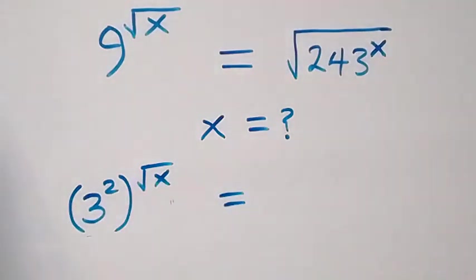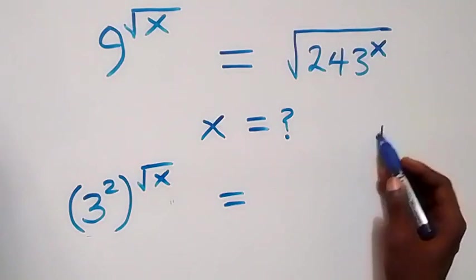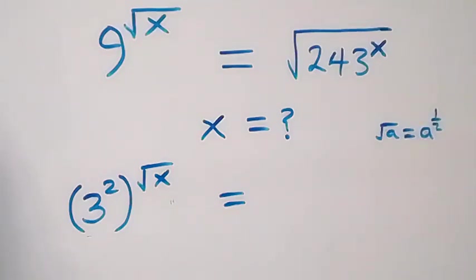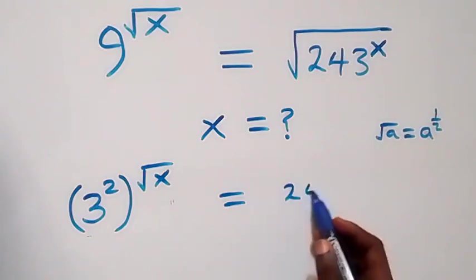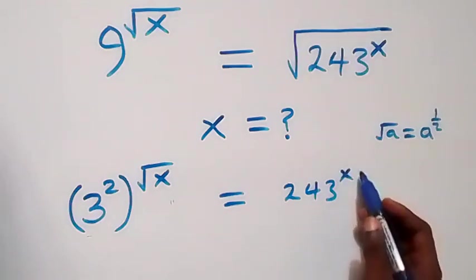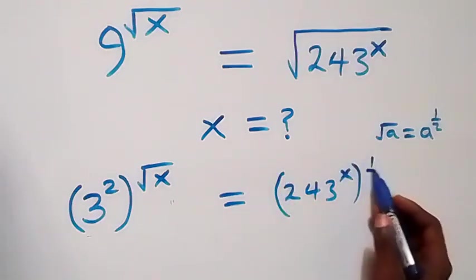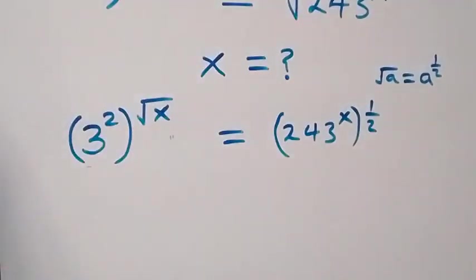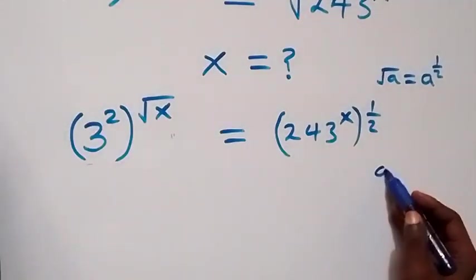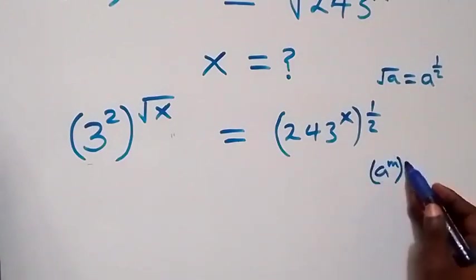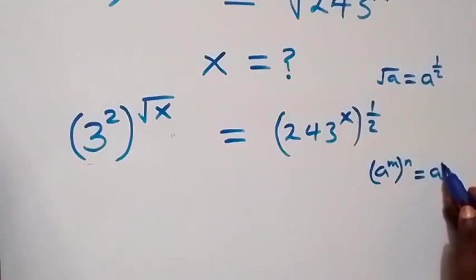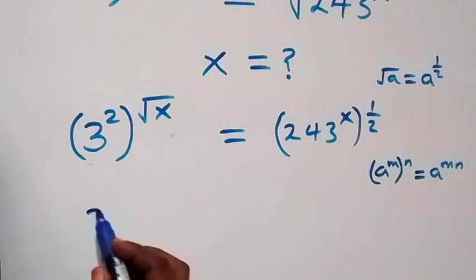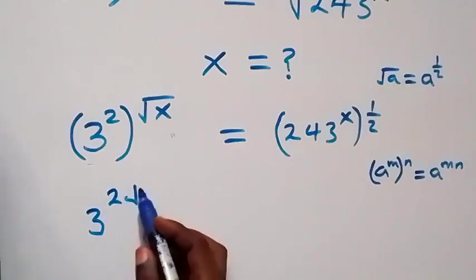On the right side, the square root of a can be written as a raised to power one half. So we have 243 raised to power x, then raised to power one half. Applying the law of indices — a raised to power m, raised to power n equals a raised to power mn — the powers multiply, giving us 3 raised to power 2 times root x.